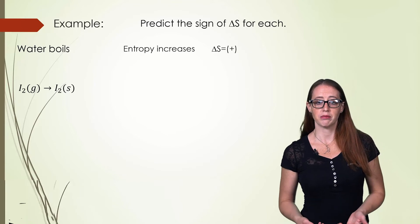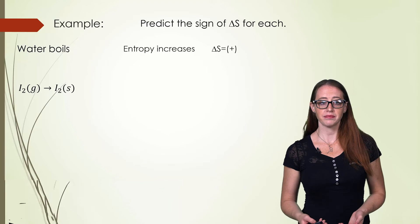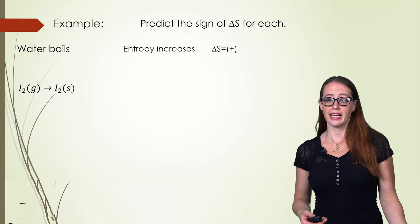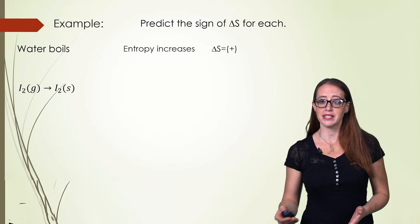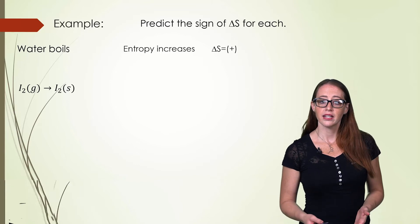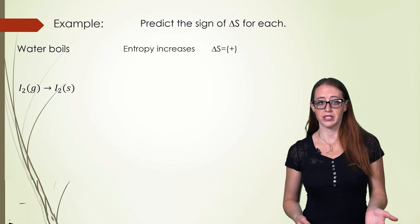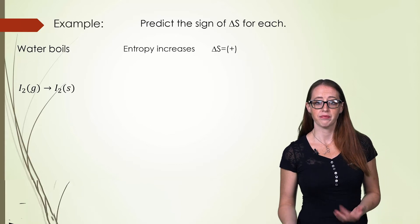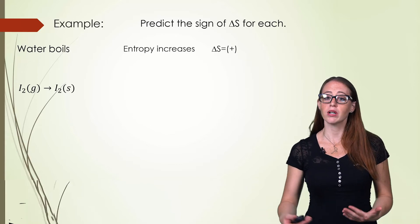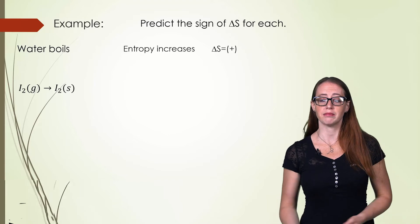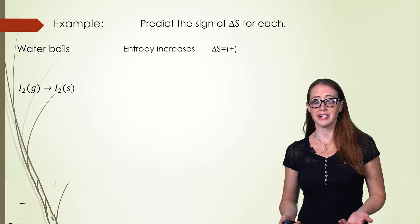Now do the next one before moving on. Here we have iodine going from a gas to a solid. Because it's going from a gas to a solid, it is going from the least ordered state to the most ordered state, or it's becoming more ordered or less random. Whichever way you like to think about it is fine.